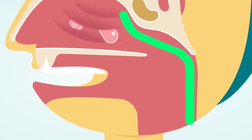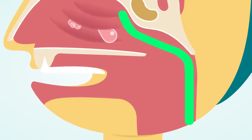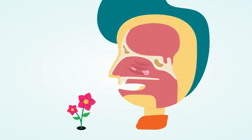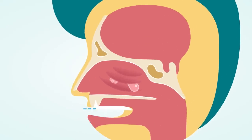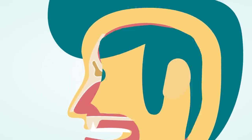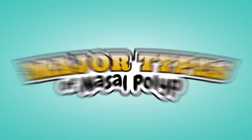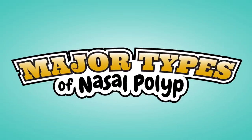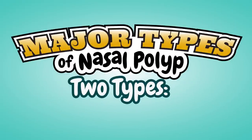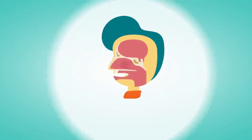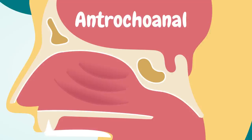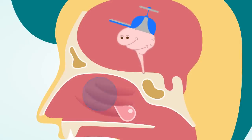Additional symptoms include: post-nasal drip, when excess mucus runs down the back of the throat; reduced sense of smell; breathing through the mouth; and a feeling of pressure in the forehead or face. There are two major types of nasal polyp. Type 1 is antrochoanal — single, unilateral, originating from the maxillary sinus, usually found in children, with infection as the common cause.